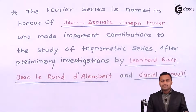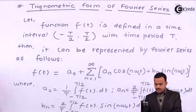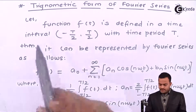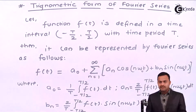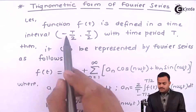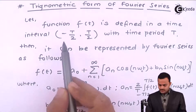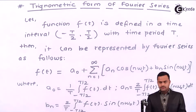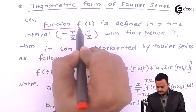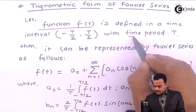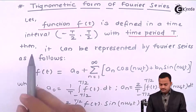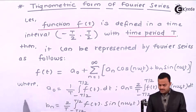There are two forms to represent these functions. The first is the trigonometric form of Fourier series. In the trigonometric form, we have a function f(t), where t is the independent variable, defined in a time interval from minus T/2 to T/2. Basically what we need to remember is the time period of the waveform. So f(t) has a time period T and is defined in this interval, and it can be represented by a Fourier series as follows.